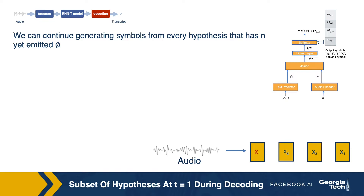Say we have four audio frames in our example audio and we want to decode it. We will assume that there are only three different letters in our language in which we are transcribing the audio: letter B, letter E, and letter C. This is just an assumption — for English, you would have 53 letters in reality.